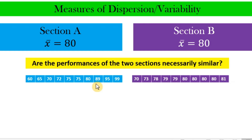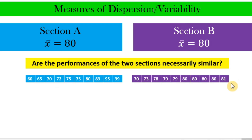Here are the data the teacher gathered from the two sections. When we investigate the scores of students from Section A, we can observe low scores such as 60, 65, and 70, but also high scores like 95 and 99 on a 100-point test. From Section B, the scores are not too low but also not too high. Yet both sections have an average performance of 80.